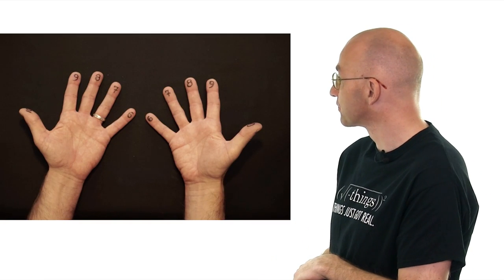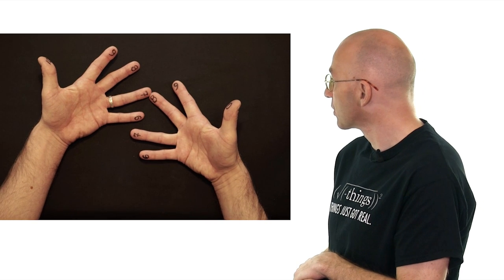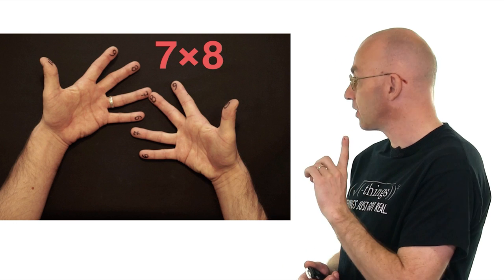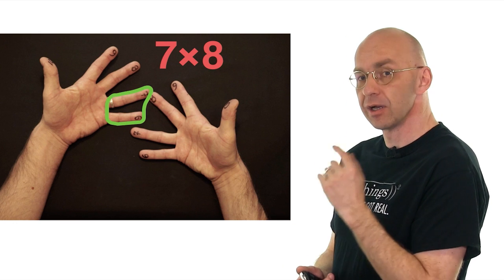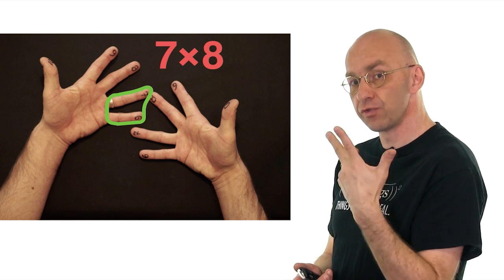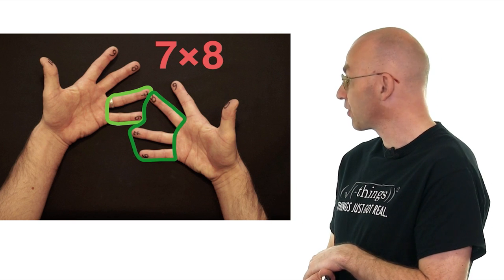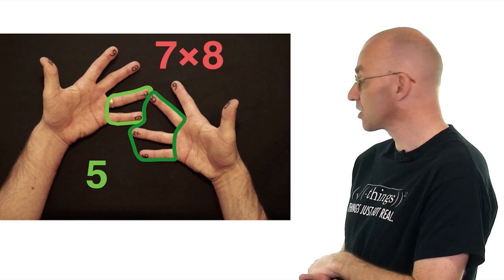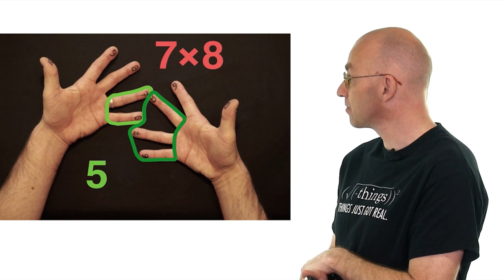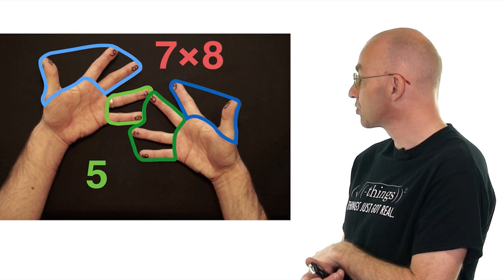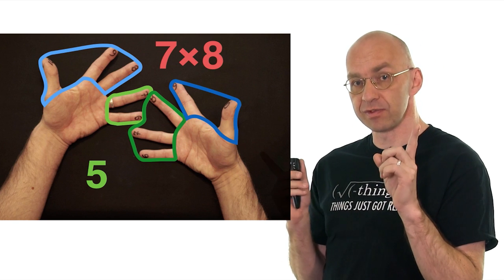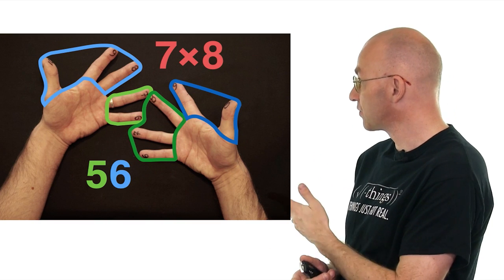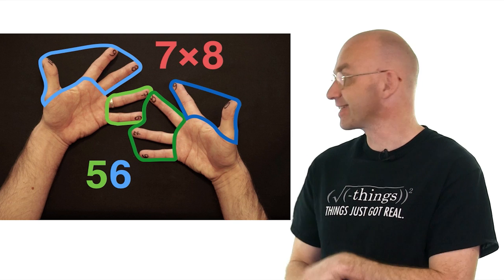So we're going to do 7 times 8. On the left hand, everything at the touching point and below there's 2 fingers there. On the right side there are 3 fingers. 2 fingers plus 3 fingers is 5 fingers, so put on the 5. Above there's some fingers left over, there's 3 there and there's 2 on the other side. Those 2 numbers we have to multiply not add. So 3 times 2 is 6. 7 times 8 is 56. Neat, huh?